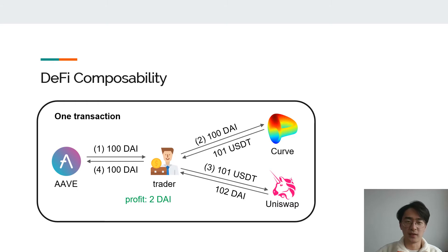Composability means that a trader can execute transactions over different DeFi platforms in one blockchain transaction. In the diagram, I present an on-chain arbitrage, which is a typical example of DeFi composability. Here, AAVE is a lending and borrowing platform. Curve and Uniswap are on-chain exchanges where traders can swap one token for another. DAI and USDT are stablecoins pegged to the US dollar. The trader can borrow 100 DAI from AAVE, trade twice leveraging the price difference between Curve and Uniswap, end up with 102 DAI, repay 100 DAI, and keep 2 DAI as profit. All these actions can be executed in one blockchain transaction without interruption.